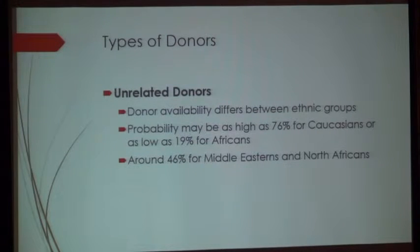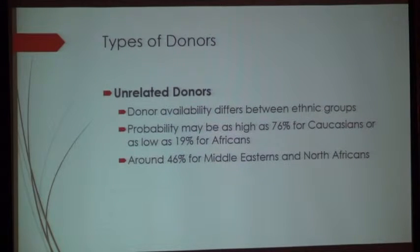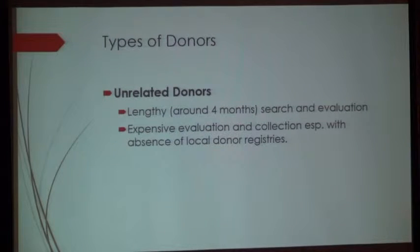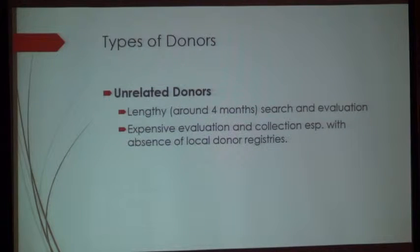For Africans, the probability of finding a donor in registries is as low as 19%. Middle Eastern and North African populations fall in between, with around 46% probability of finding a fully matched donor, and 70–75% if a single locus mismatch is accepted. However, we still need to have a registry first. The search and evaluation process for a matched unrelated donor can take up to four months and is very expensive, especially without a local registry, as all international registry fees must be paid externally.